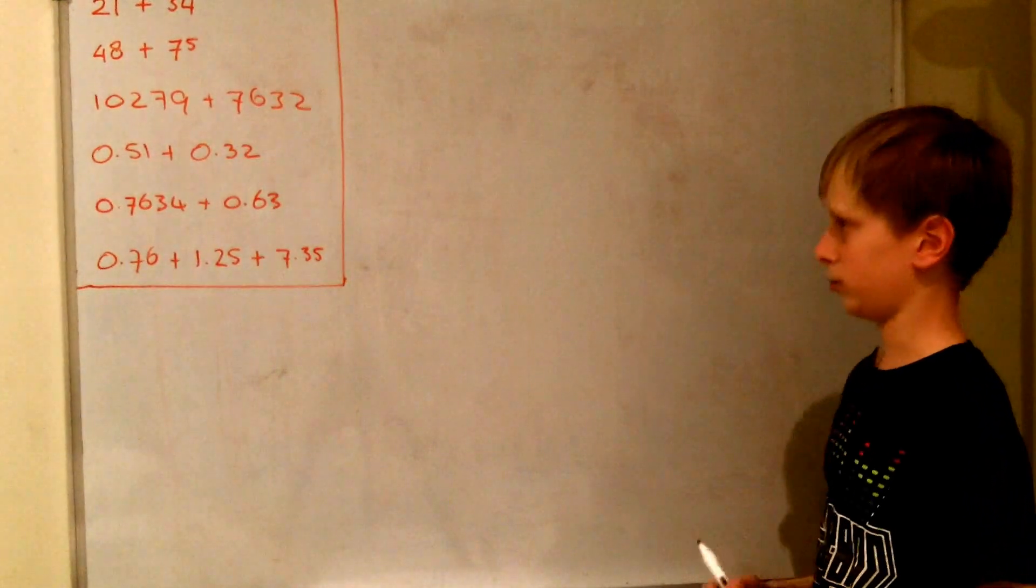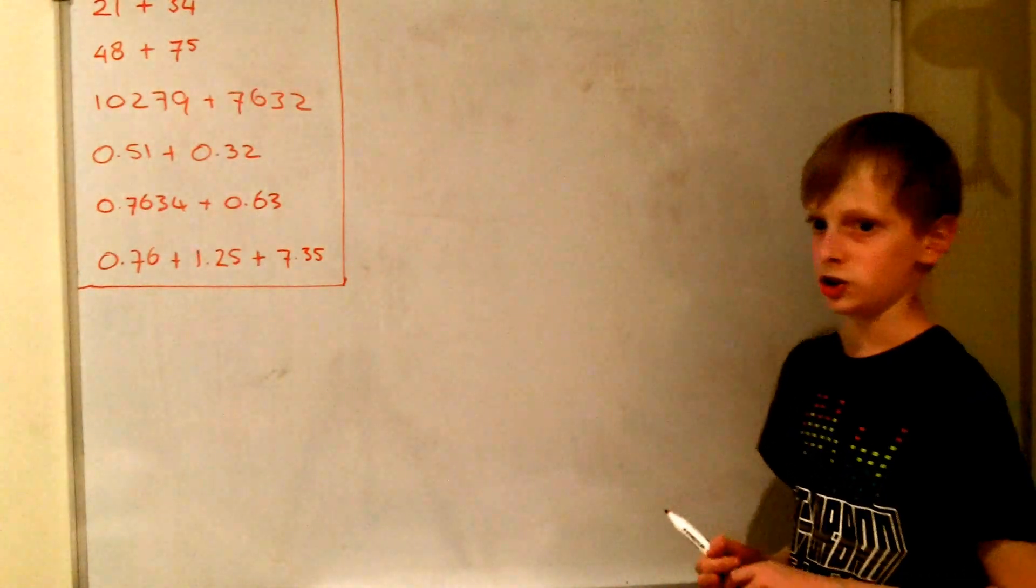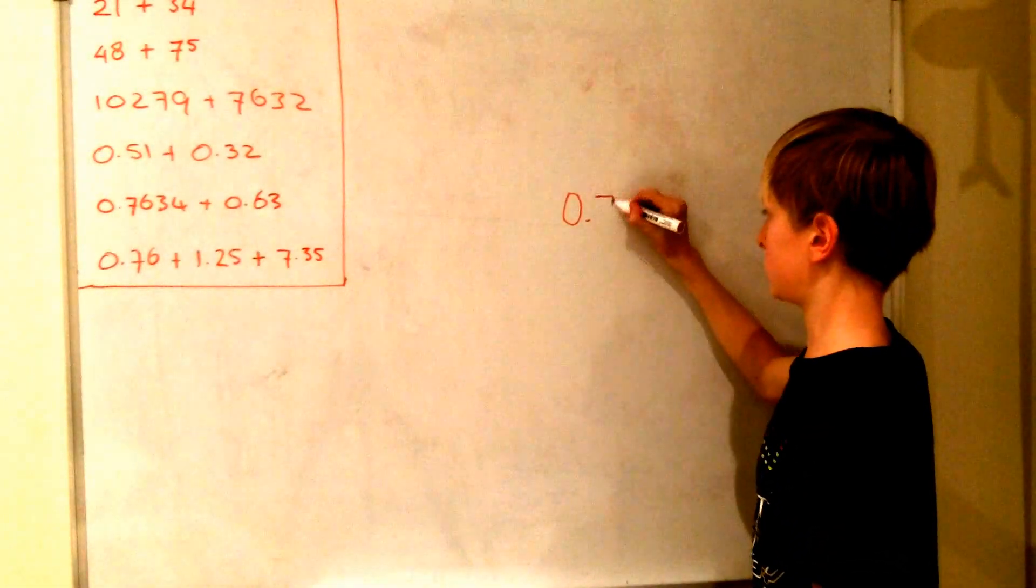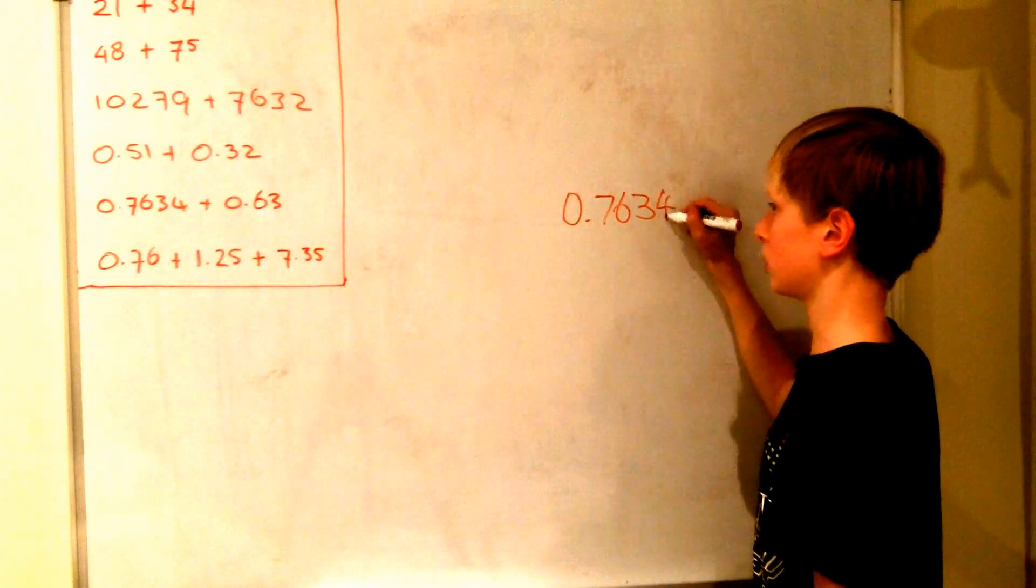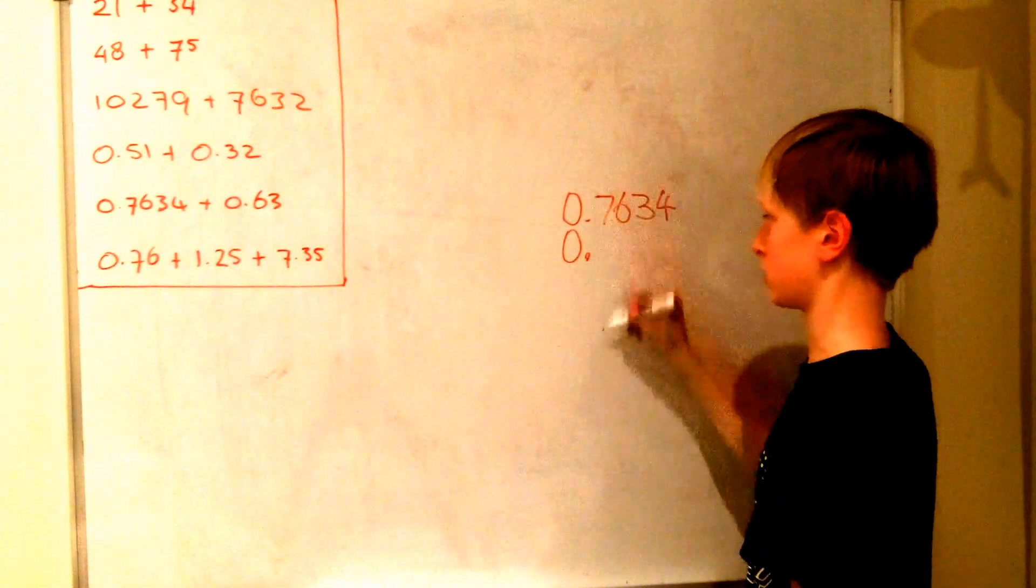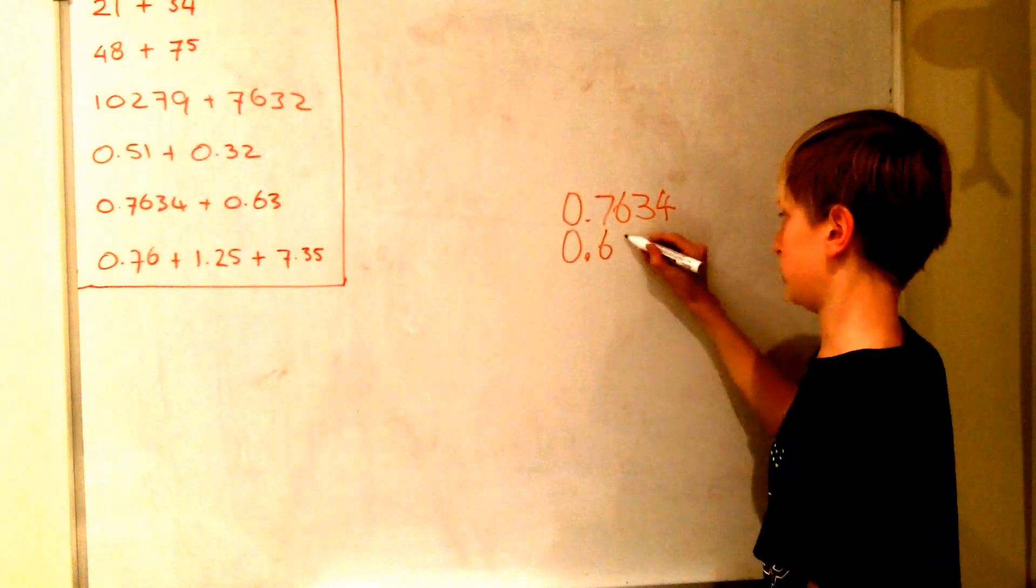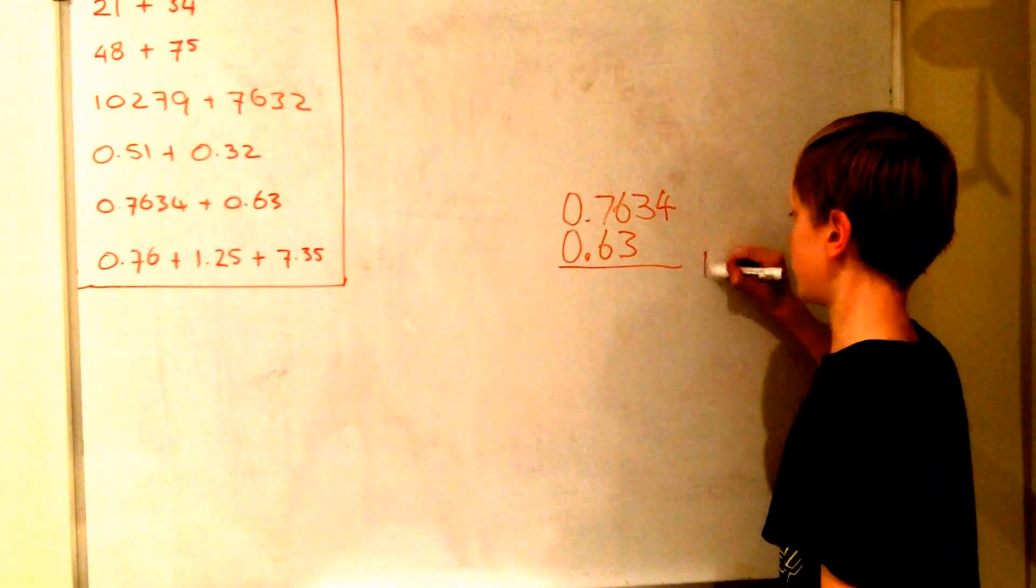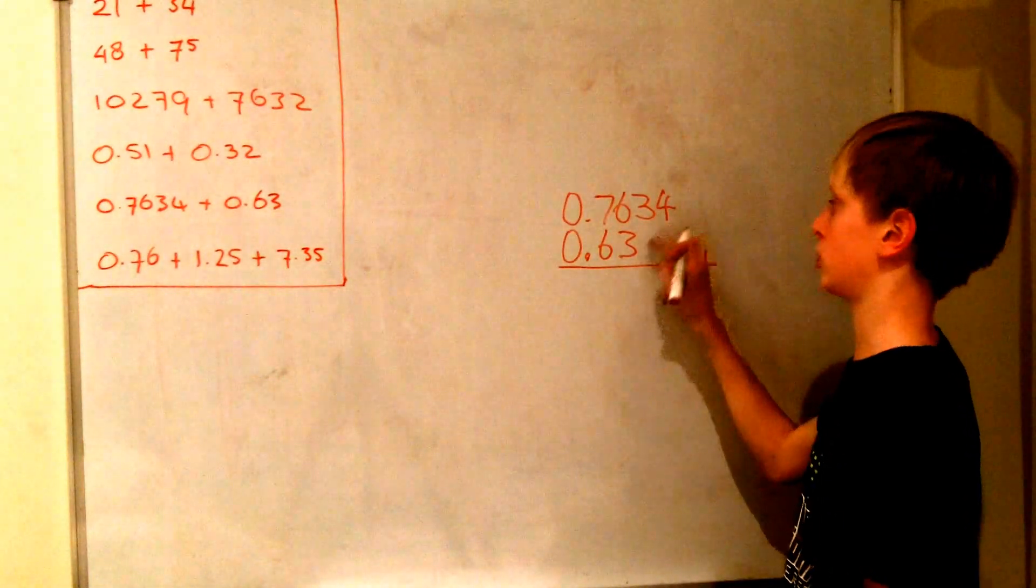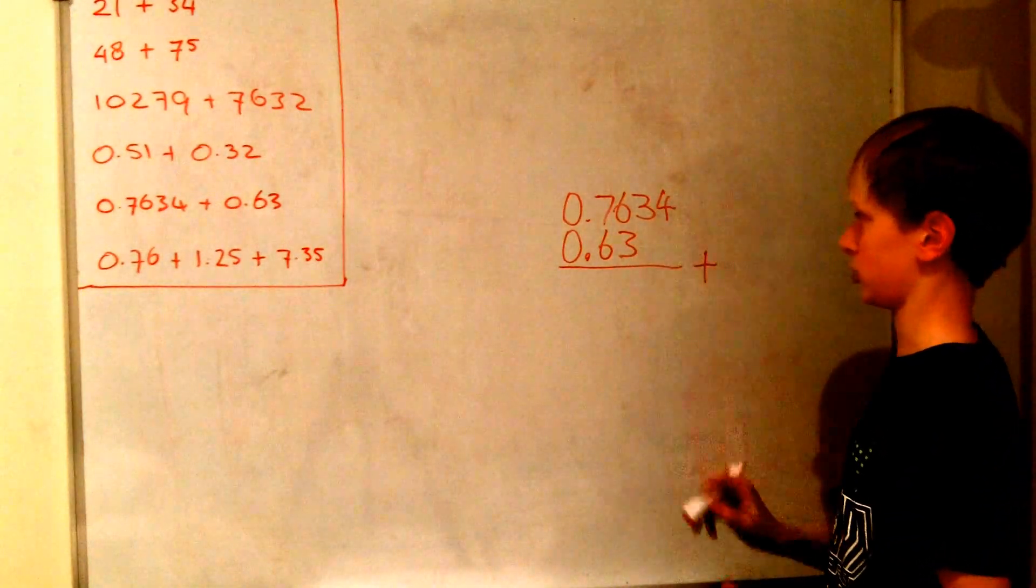So now we can also do this with more decimal places. So that means we will have 0.7634 plus 0.63. Again the line with the plus sign. So how are we going to do this? We are not going to add the 4 to the 3. Because that is going to cause a different result. As those ones are tens. And those ones are thousands.